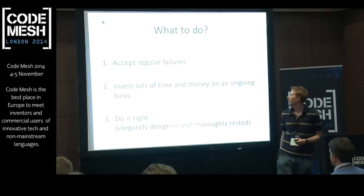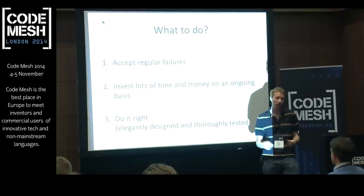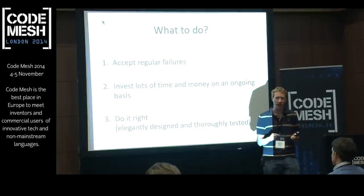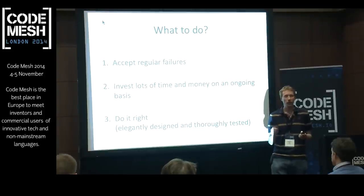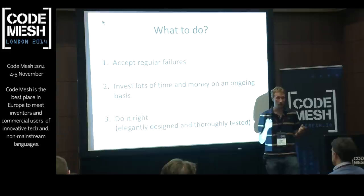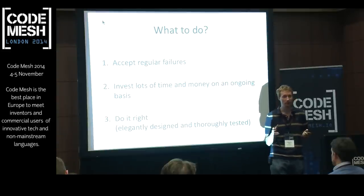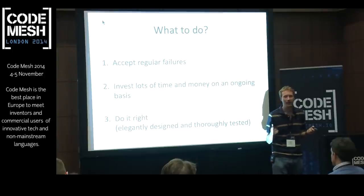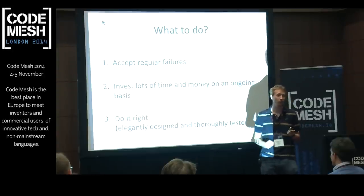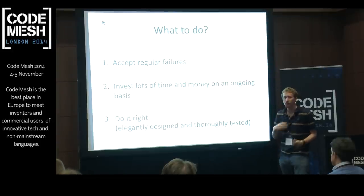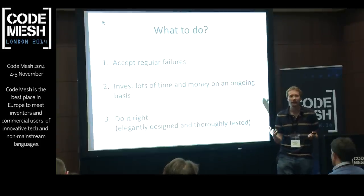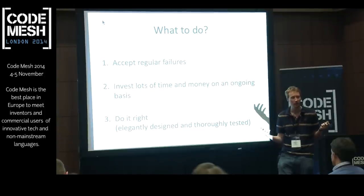So what do we do? Well, we can accept regular failures — our releases fail to build every other day, our tests don't always run. We can invest lots of time and money on an ongoing basis, continually babysitting these fragile systems. My experience in banking is that most people do both of those, and it rarely works. It's an expensive way of failing. The way I'd like to suggest is we should do it right — we know how to do software right, we just need to apply the same principles to the glue.